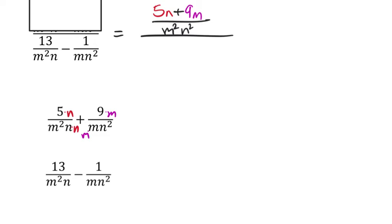Okay, so this one, same idea. We had m squared n, m n squared. Same things are missing, just like this one was. So the first fraction is missing an n squared. So it has to multiply the n by n. So the 13 also multiplied by n.